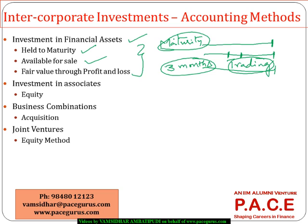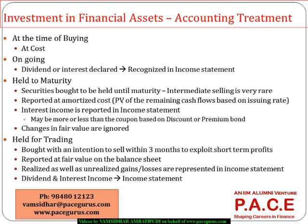So whenever talking about investment in financial assets, it goes into one of those three categories. For investment in associates and joint ventures, the method used from an accounting dimension is the equity method — we will discuss this in depth with an example. For business combinations, where the stake is more than 50 percent and it is a controlling stake, we use the acquisition method of preparing financial statements. We will spend time understanding both the equity method and the acquisition method.